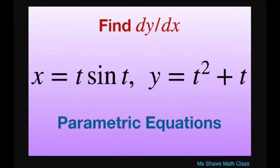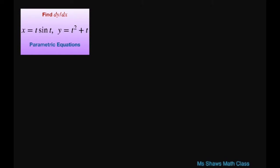Hi everyone. We're going to find the derivative of y with respect to x of our two parametric equations here. So let's start with y. You have y equals t squared plus t.